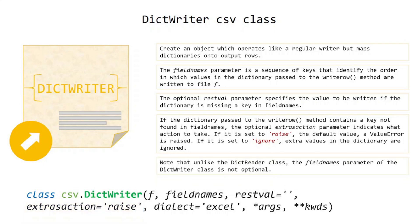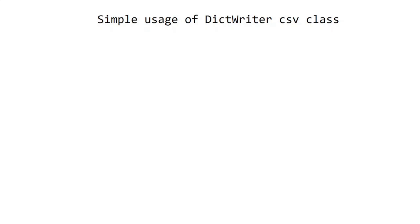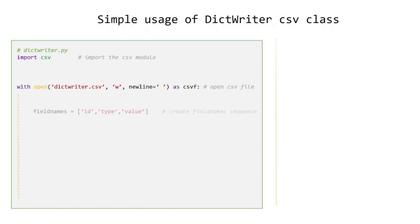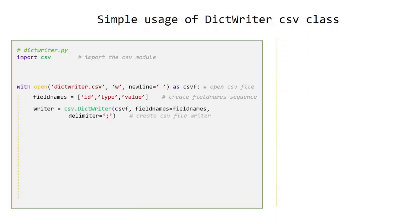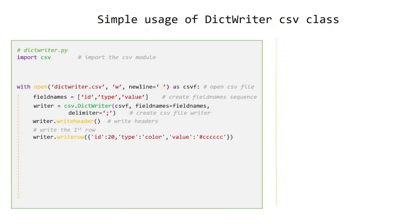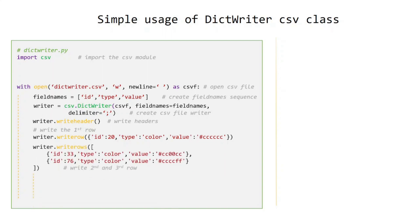Note that unlike the DictReader class, the fieldnames parameter of the DictWriter class is not optional. Simple usage of DictWriter CSV class: import the CSV module, open the CSV file in writing mode, create the field names sequence, create a CSV file writer object. Before writing rows, write the headers first, then write the first row and others. Run it in terminal and check the result file.